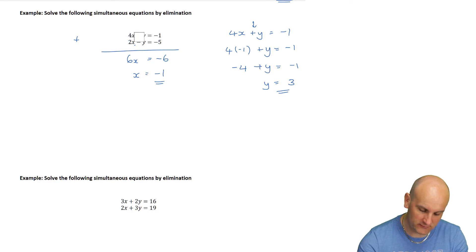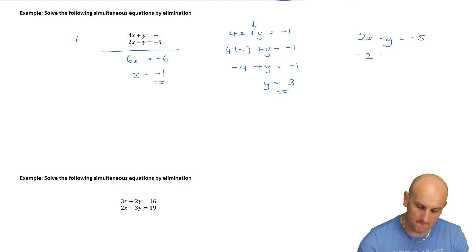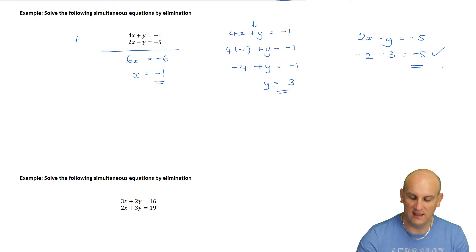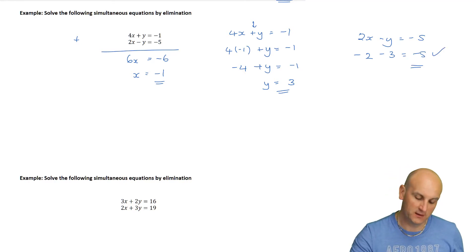It seemed to work until I substituted it into my second equation. Taking 2x minus y equals negative 5: 2 times negative 1 is negative 2, minus 3 - does that equal minus 5? It does. I'm very, very happy.